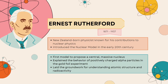The next scientist is Ernest Rutherford, a New Zealand-born physicist known for his contributions to nuclear physics. He introduced the nuclear model in the early 20th century. His was the first model to propose a central massive nucleus, explained the behavior of positively charged alpha particles in the gold foil experiment, and laid the groundwork for understanding atomic structure and radioactivity.